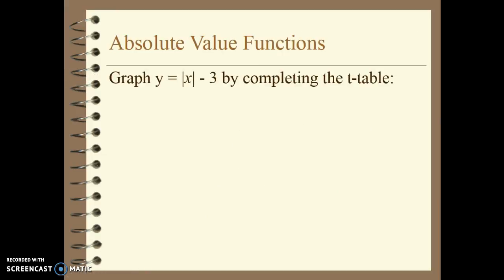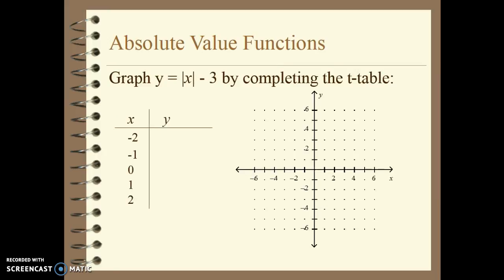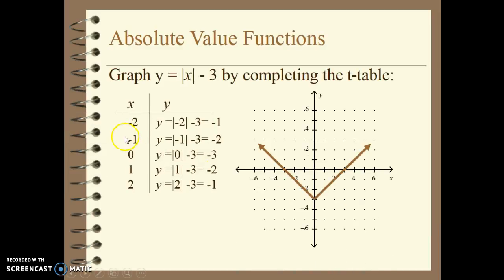Let's graph y equals the absolute value of x minus 3. We need a chart with five values for x and then solve those values to get our graph. Plug in negative 2 for x: the absolute value of negative 2 is positive 2, minus 3 equals negative 1 — so we get the point (negative 2, negative 1). Plug in negative 1: the absolute value of negative 1 is 1, minus 3 equals negative 2 — so x equals negative 1 gives negative 2. And so on — that's how we get those points and the graph.